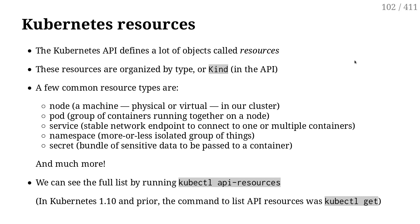For instance, there are nodes corresponding to the machines, like members of the cluster. We have pods — that's a group of containers. We have services, which represent a connection, an endpoint to which we can connect. We have namespaces, we have secrets, we have a whole bunch of types.